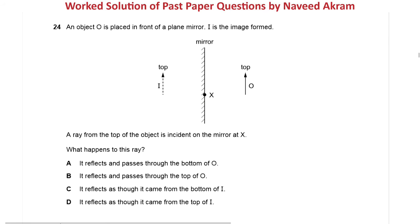The ray goes from the top of the object to point X on the mirror. Option A says it reflects and passes through the bottom of O — no, it reflects but does not pass through the bottom of O, because the angle of reflection equals the angle of incidence, so the reflected ray goes somewhere else. Option B says it reflects and passes through the top of O — again, it does not pass through the top of O.